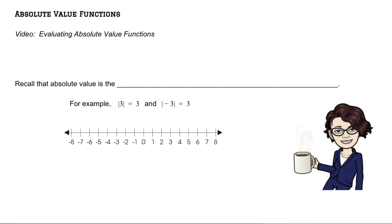So let's remember what absolute value really is. Absolute value is defined as the distance a number is from zero.